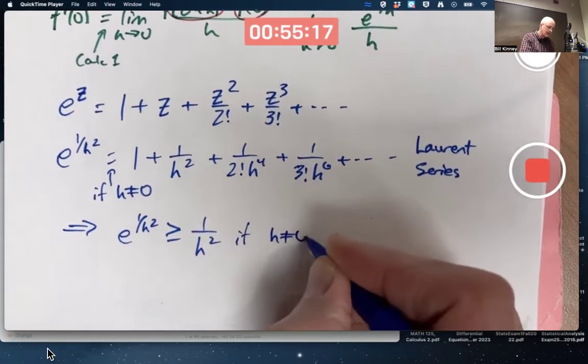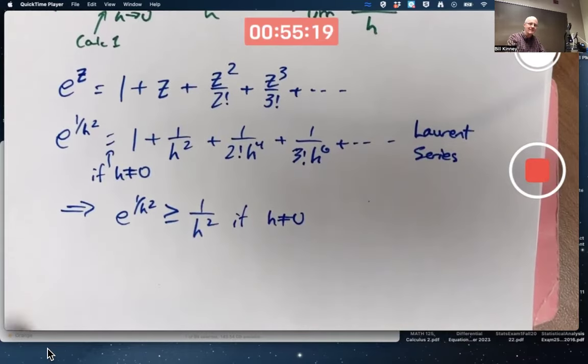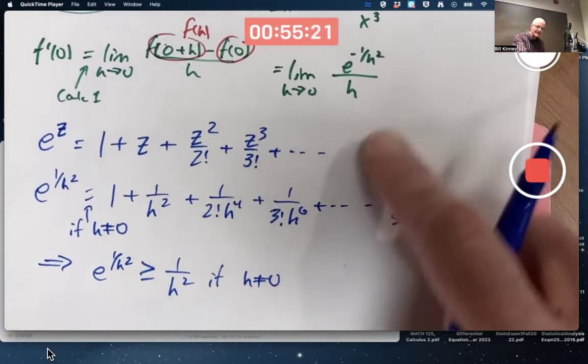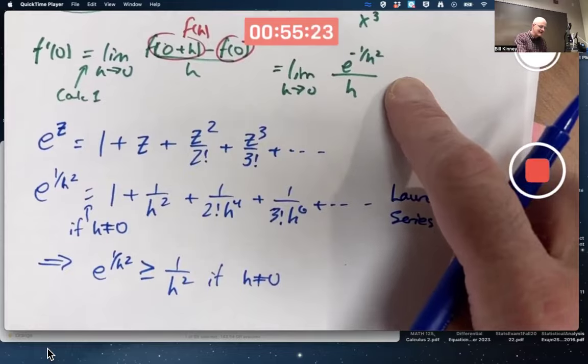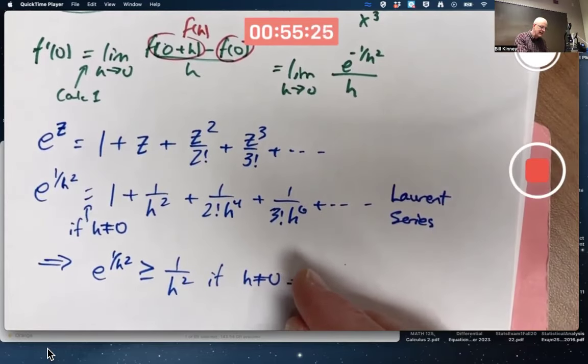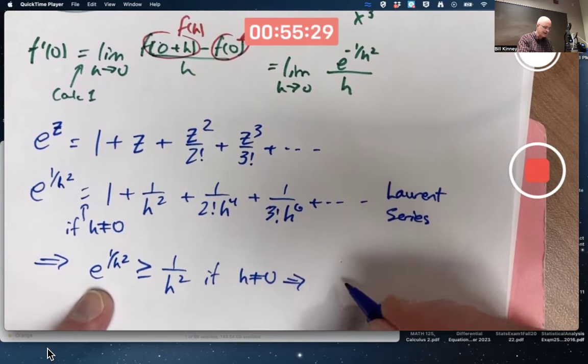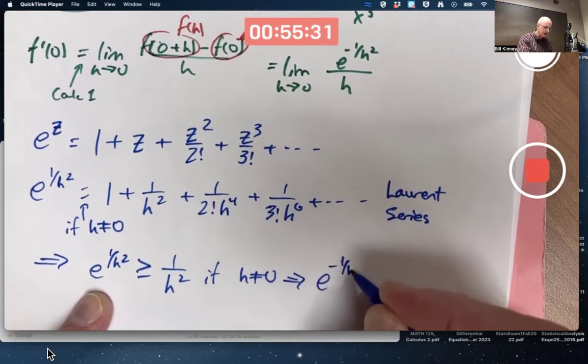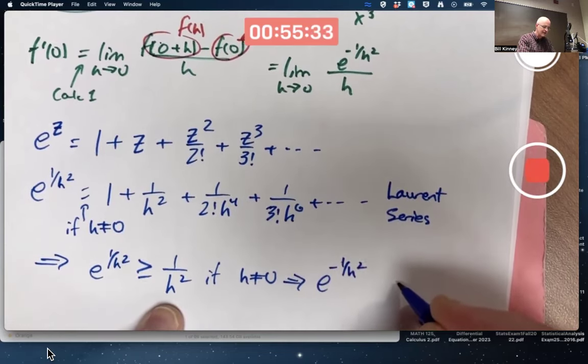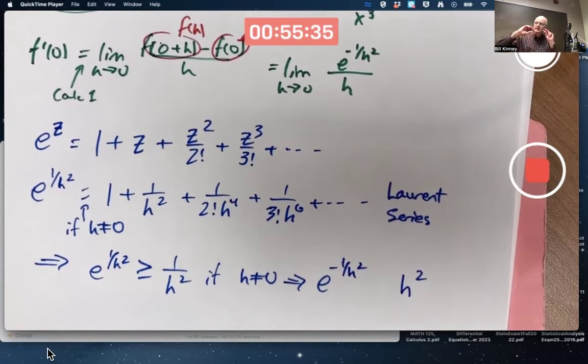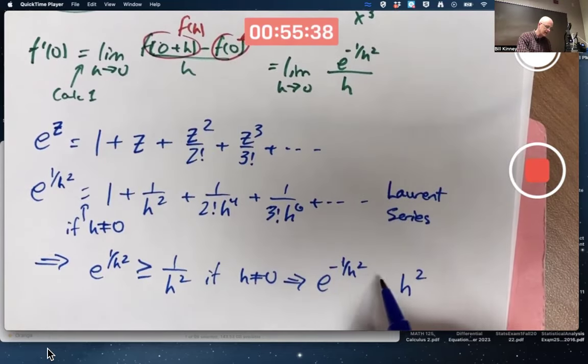This is true if h is not zero. Now why am I doing that? I'm going to try to relate it to this. I'm going to effectively take the reciprocal of both sides now. You take the reciprocal of that thing, you get e to the negative one over h squared. Take the reciprocal of that thing, you get h squared. But if you take the reciprocals of both sides, you have to switch the direction of the inequality.